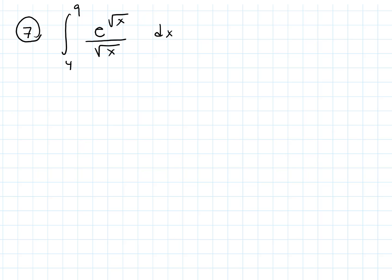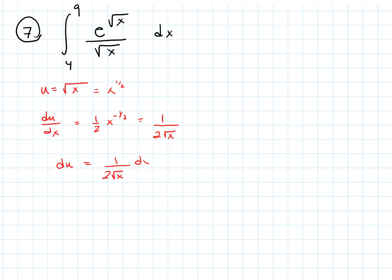On this first example, we have to identify what our u is. I see that we have the square root of x nested inside the exponential. So u is going to be √x, or x to the 1/2, so that du/dx is (1/2)x^(−1/2), or 1 over 2√x. Separating the differential: du = (1/(2√x)) dx.